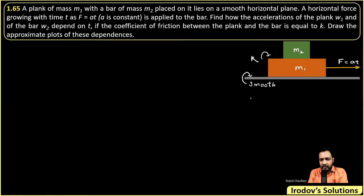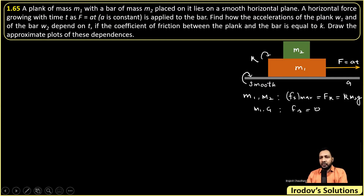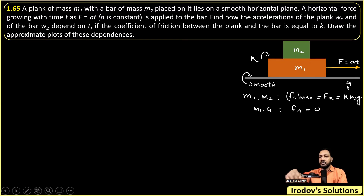First, we should calculate the friction acting between m1 and m2. The normal reaction between m1 and m2 is m2g, so the maximum static friction and kinetic friction value are the same — since we are given only one coefficient — and that becomes k times m2g. There is no friction between the ground and m1, so between m1 and the ground the friction is zero.